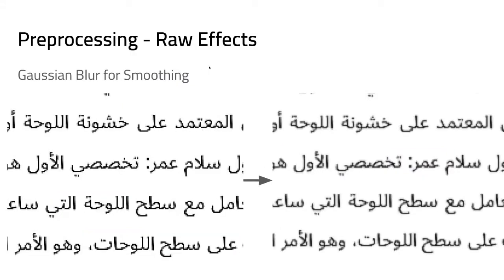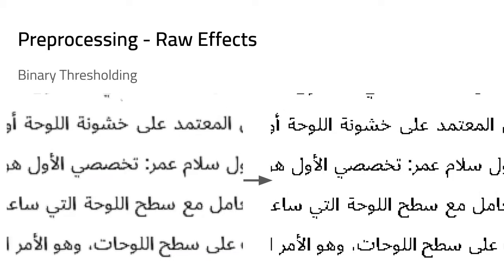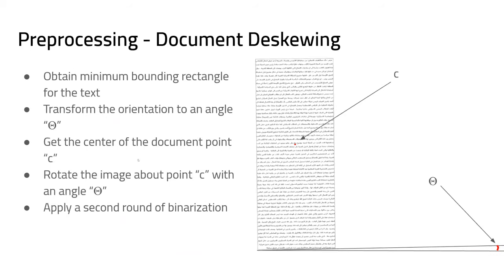The first part of pre-processing was a Gaussian blur, done to smooth the letters in case pictures were pixelated. The second step was binary thresholding, converting grayscale images to binarized images for simpler processing. Finally, if images were skewed or rotated, we performed document deskewing by finding the minimum bounding rectangle and the center of the image, then rotating around that center.